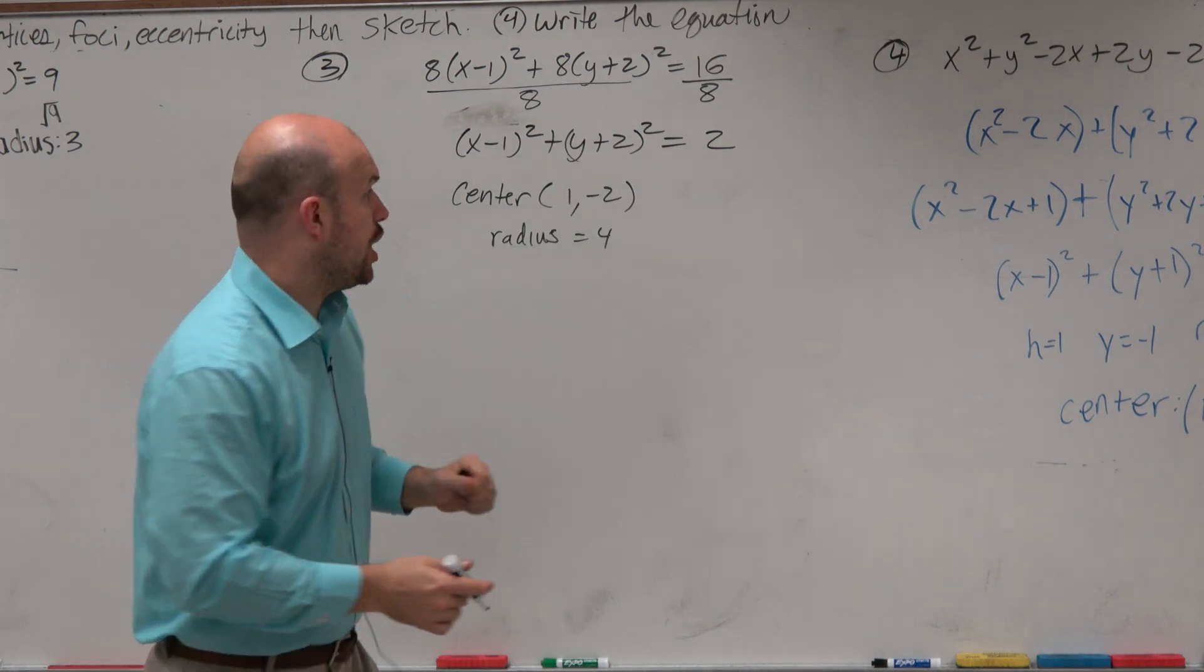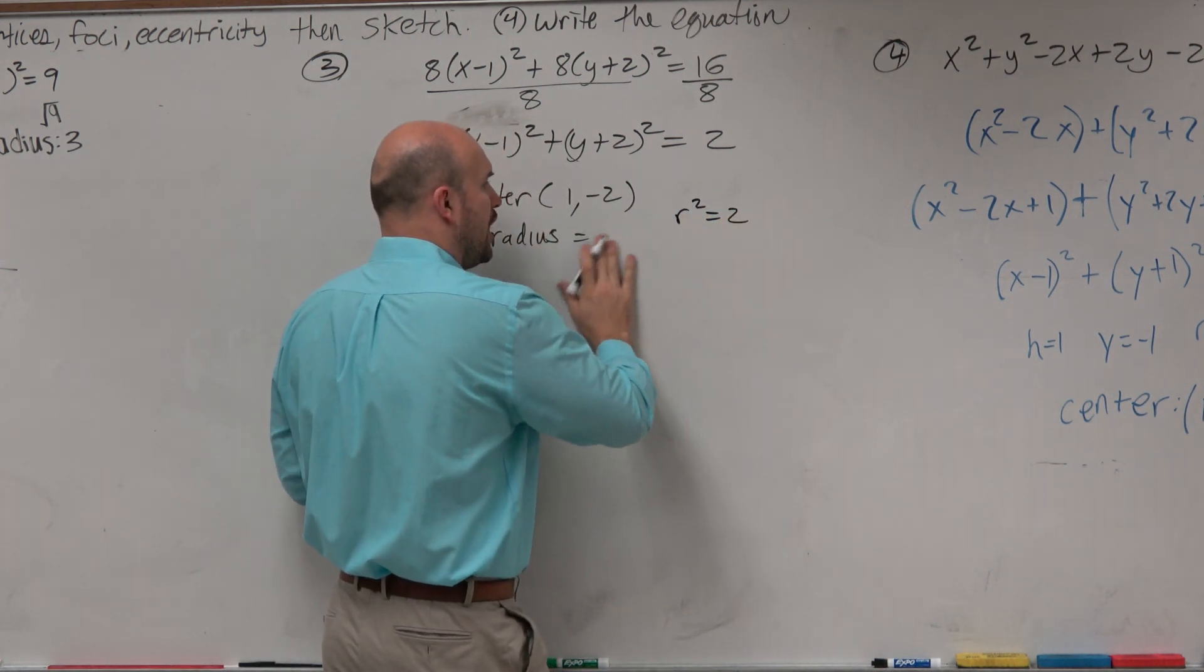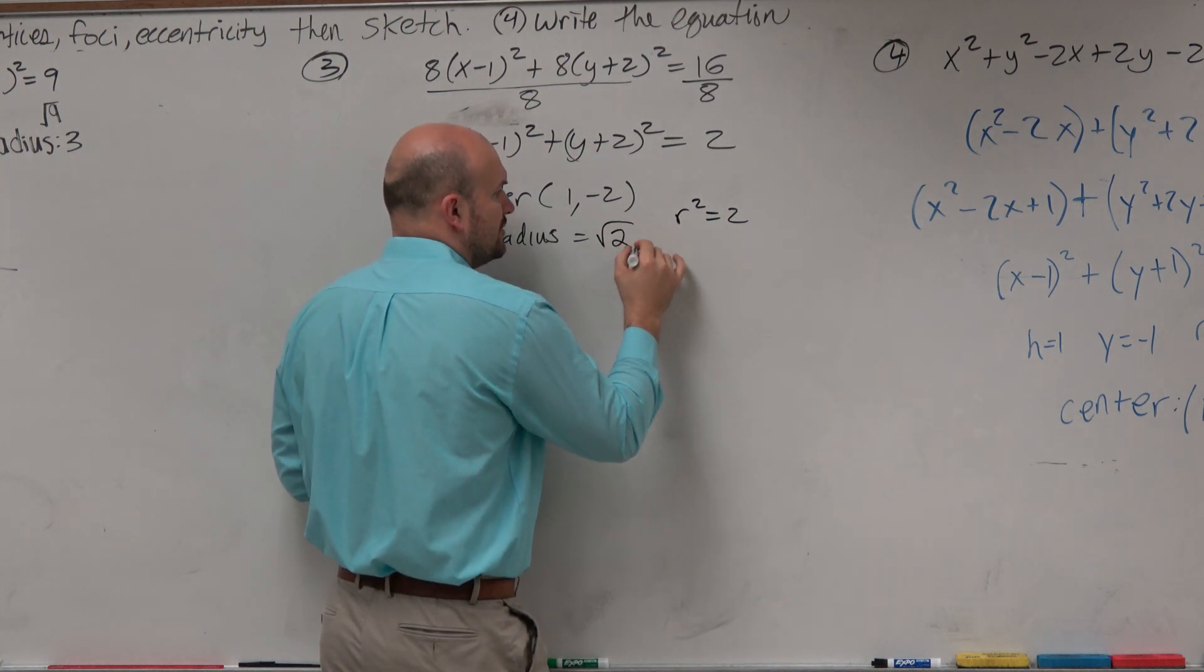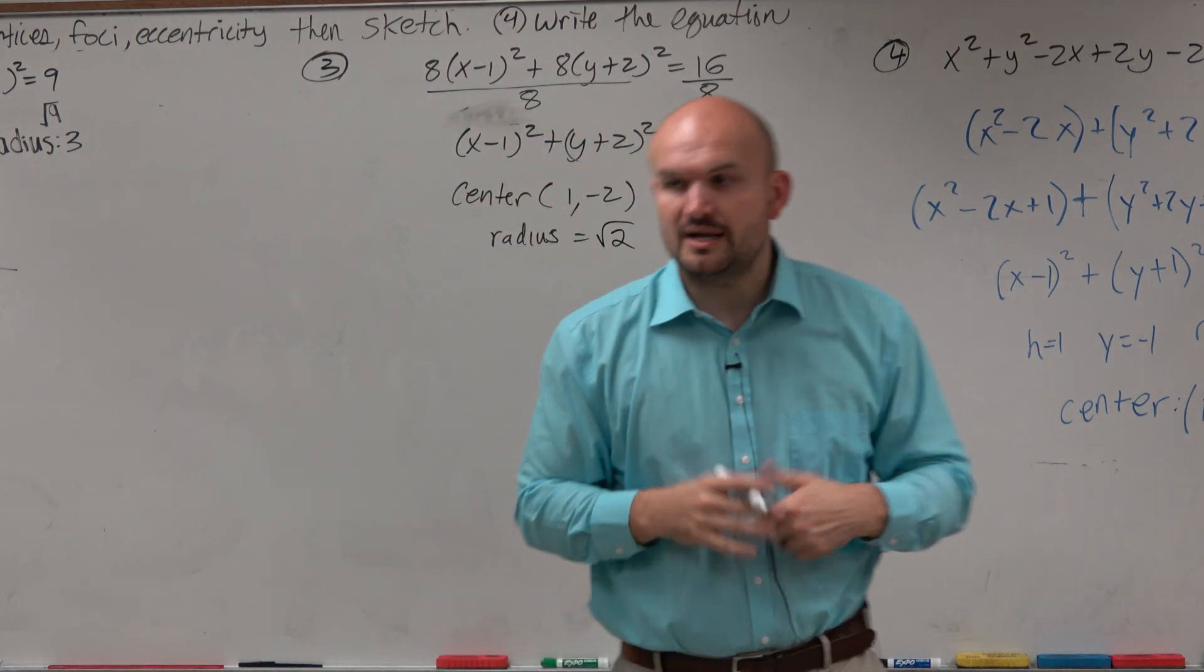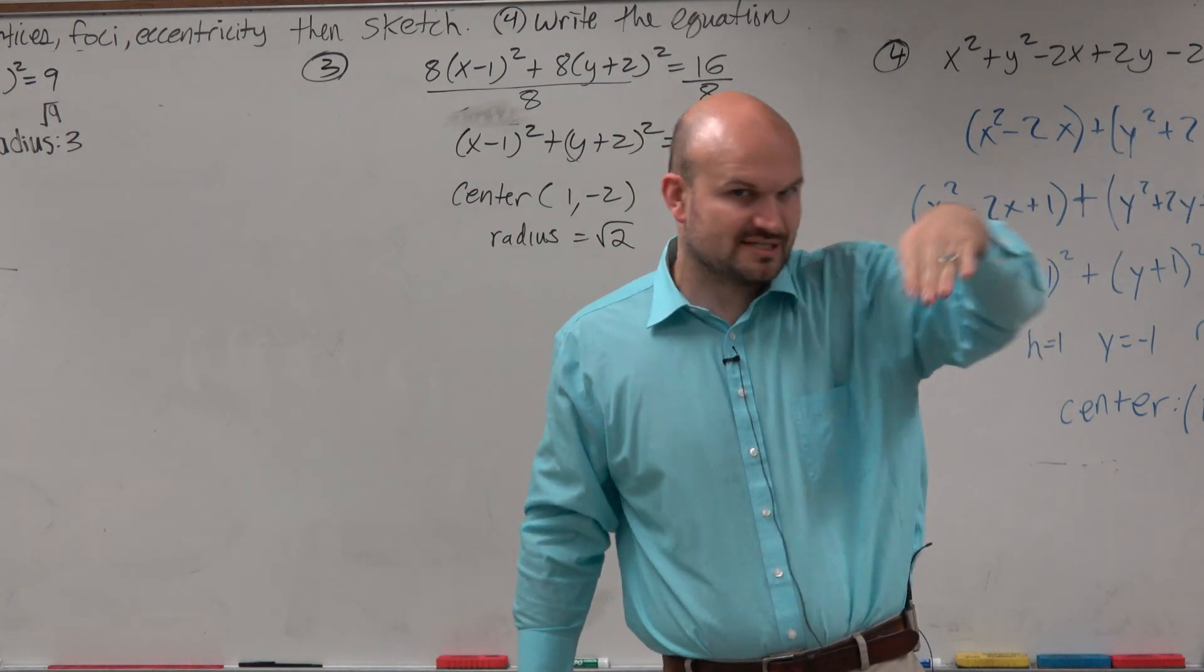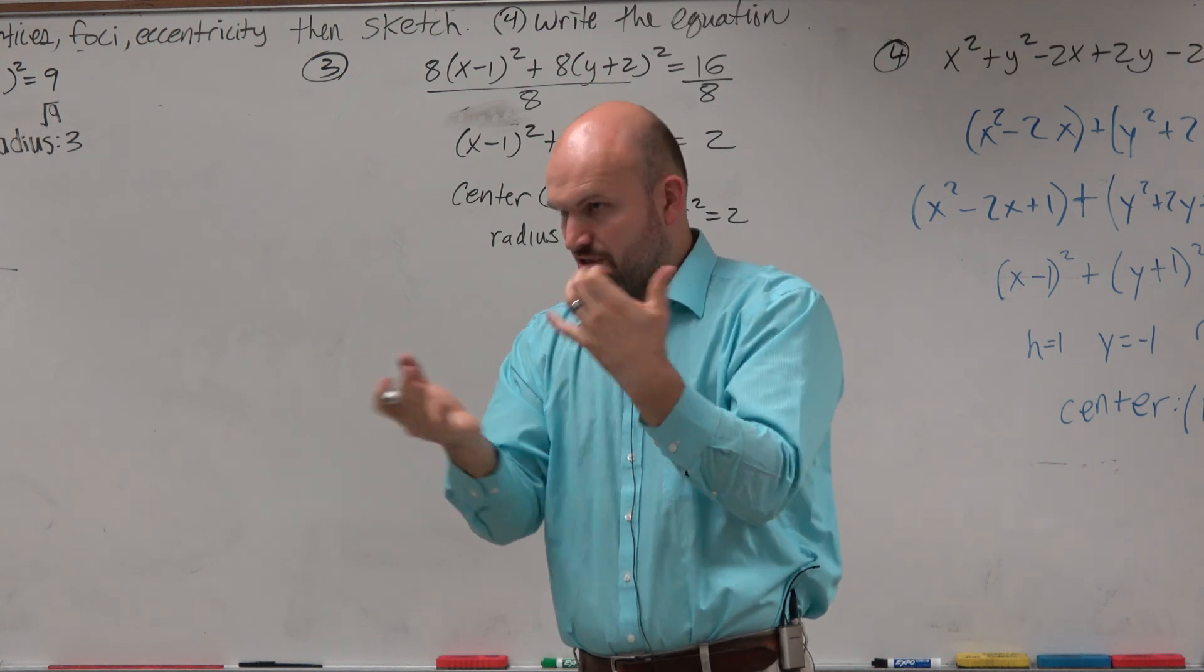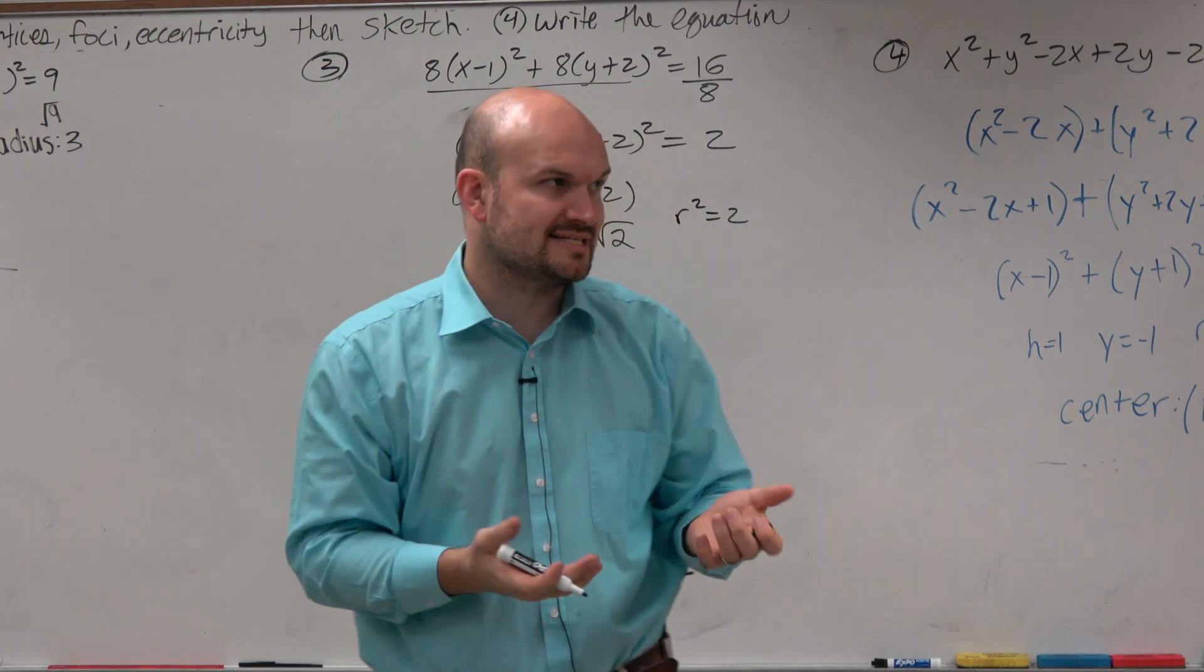Now, so therefore, r² = 2. So therefore, r is just going to equal √2. Right? Now, again, you could say plus or minus, but again, guys, it's a radius. It doesn't matter if it's plus or minus. The radius represents a distance, not a direction, so you can just use the positive value there.